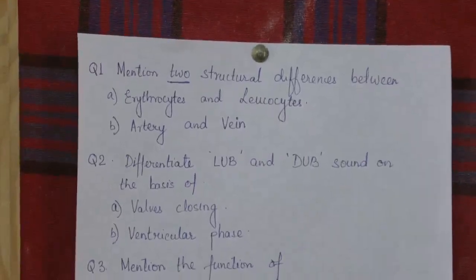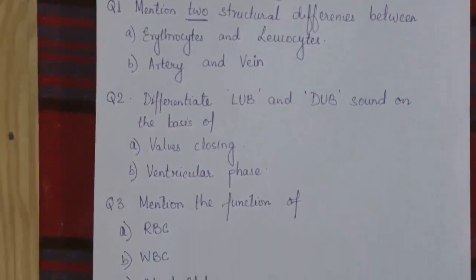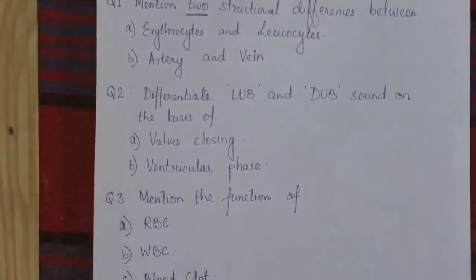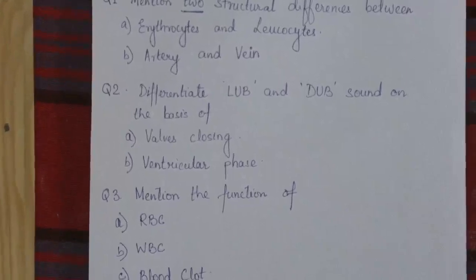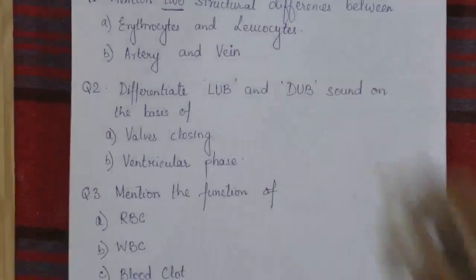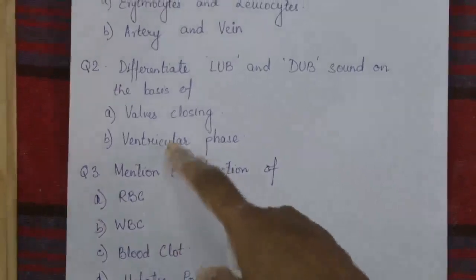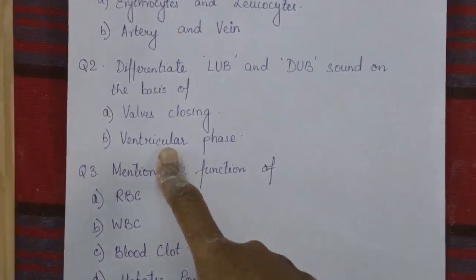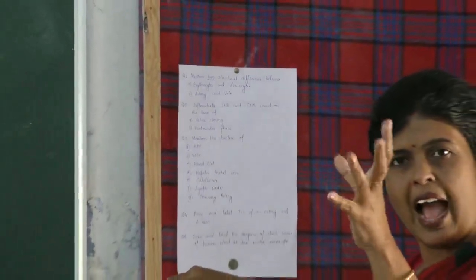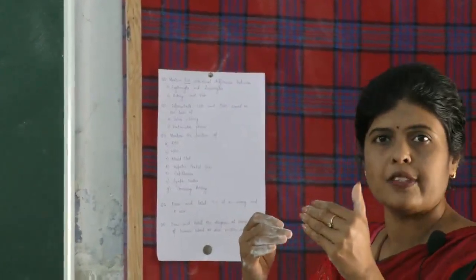Question number two: differentiate between lub and dub sounds. You have to differentiate on the basis of which valve closure produces each sound, and the second difference based on ventricular phase. Lub sound is produced when the ventricles start to systole, and dub sound is produced when the ventricles start to diastole. As the ventricles diastole, blood should not flow back, which is why the semilunar valves close — as mentioned in your book.